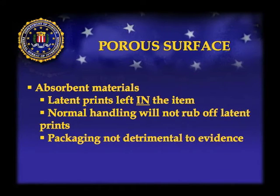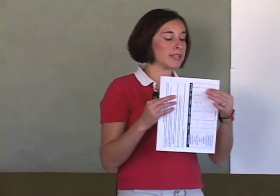The difference is that porous surfaces are absorbent — this is very important to leaving latent prints. If I touch this piece of paper, my print is left in the evidence; the porous surface absorbs the print. If I rub this piece of paper, that print is not going to come off because it was absorbed into the specimen. So normal handling will not rub off latent prints. For porous items, packaging is not detrimental to the latent prints — you can package them in any means necessary without worrying about friction rubbing off the prints.